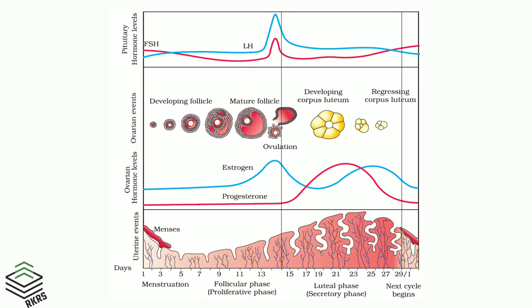The vertical line passing through the middle of the graph represents the ovulatory phase on the fourteenth day of the cycle. During this phase, high levels of LH induce the rupturing of the Graafian follicle, thereby facilitating ovulation.